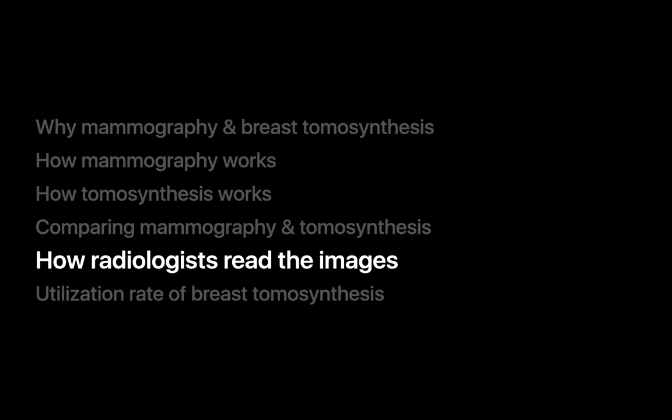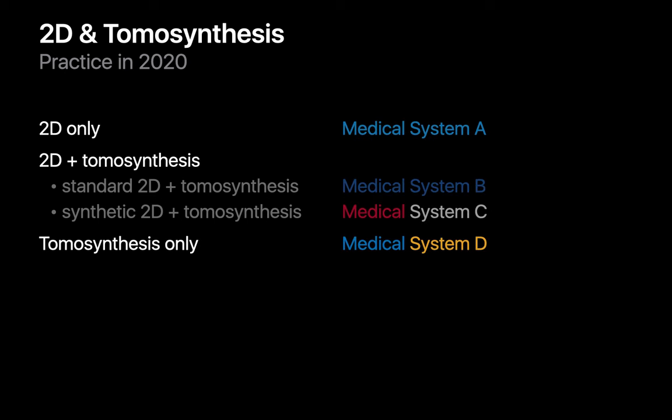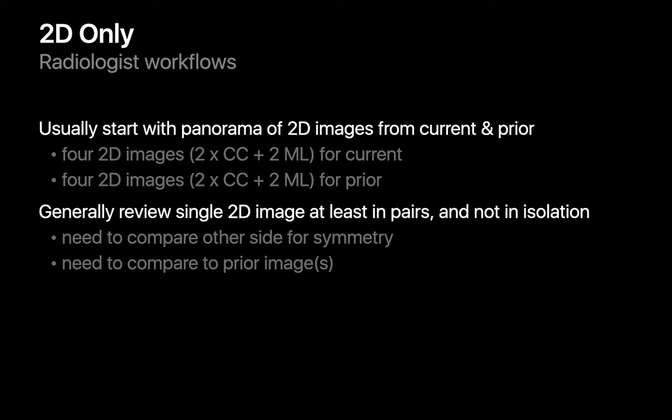So, how do radiologists handle reading all of these images? Breast imaging practices across the United States currently vary in their use of tomosynthesis. Some often use only 2D mammography in their practice, some use only tomosynthesis, while others use both — and in those practices there are differences in whether the 2D mammograms were acquired conventionally or synthetically from the tomosynthesis acquisitions. In settings relying on only 2D mammograms, a radiologist may start their interpretation by viewing a panorama of the patients' current and prior 2D mammogram images. Each 2D image is carefully inspected and compared to the contralateral breast in the same view on the same date, and compared to the same breast in the same view on a prior date.